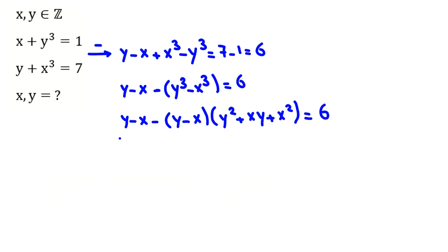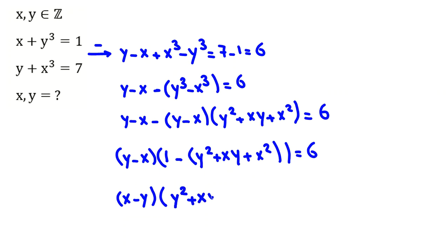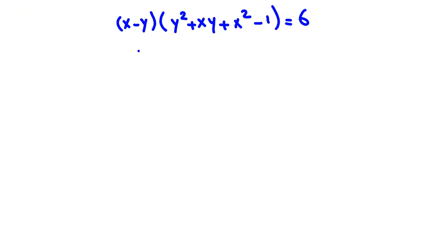We factor out y minus x: (y minus x) times (1 minus (y squared plus xy plus x squared)) equals 6. Multiplying by negative one on both sides, we get (x minus y) times (y squared plus xy plus x squared minus 1) equals 6. Since x and y are integers, we check the factor pair cases.